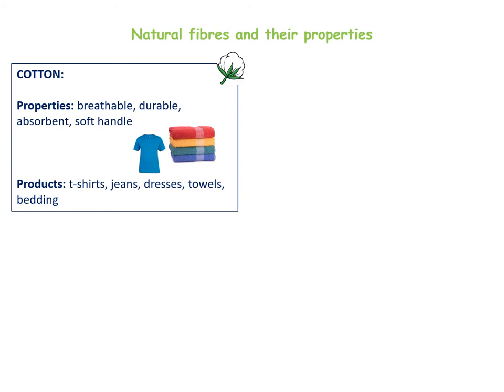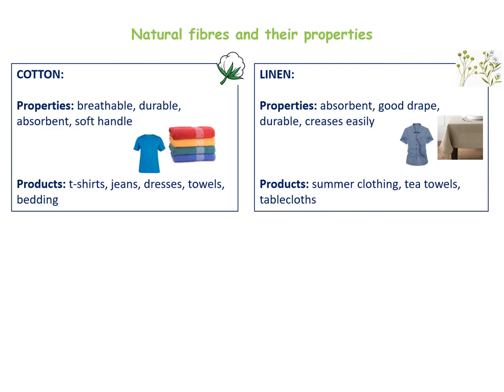Cotton makes it suitable for things like bath towels and lightweight t-shirts. Linen is a fabric that is also absorbent and has a good drape — that means it hangs well on the body shape. It is durable, however it does crease easily. It is very lightweight and keeps you cool, so this is perfect for summer clothing, tea towels and tablecloths.